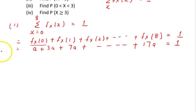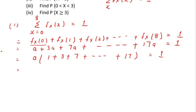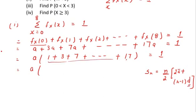Adding all the probabilities, we factor out a: a times (1 + 3 + 5 + ... + 17) = 1. There are 9 terms since x goes from 0 to 8. We can use the sum of first n terms of an AP: S_n = (n/2) × (2a + (n−1)d). Here n = 9, the first term is 1, so 2×1 = 2, and n−1 = 8 with common difference d = 2.